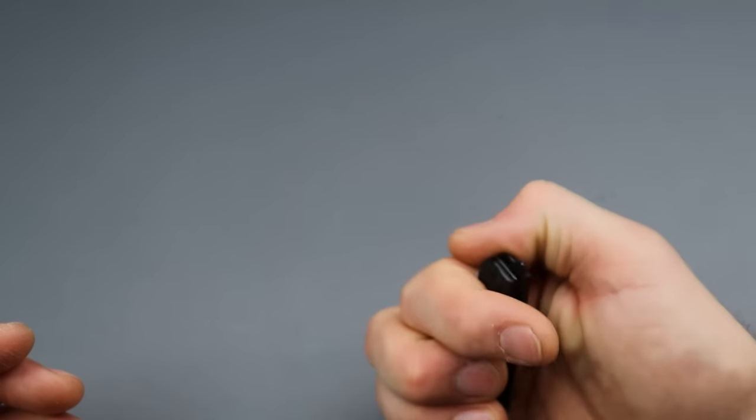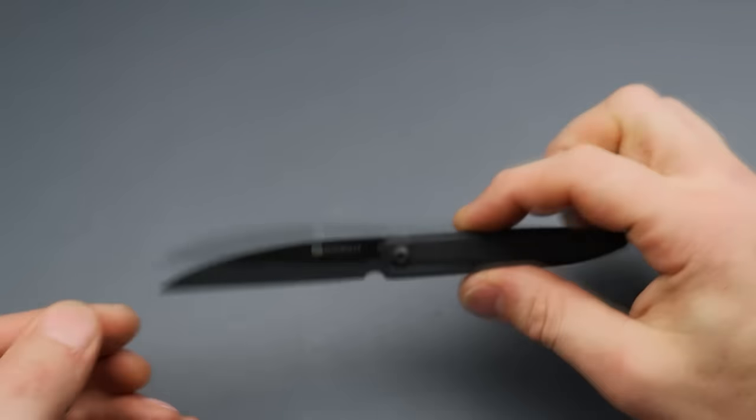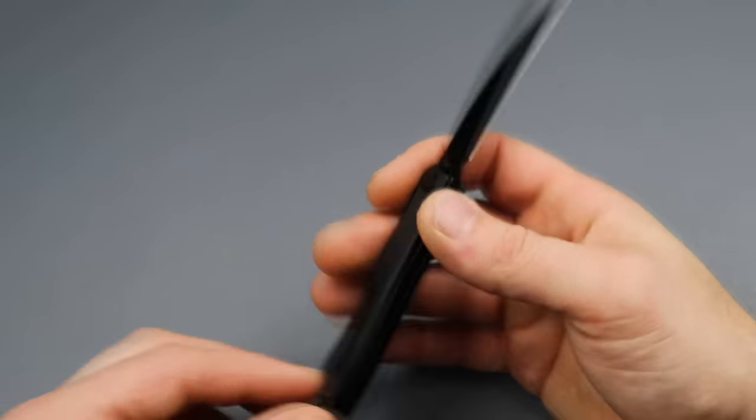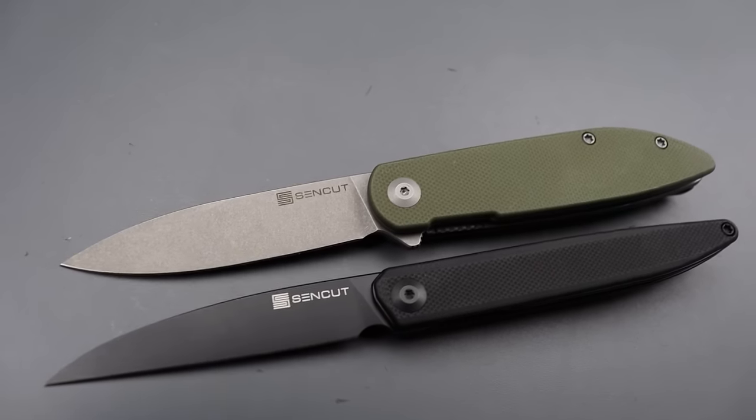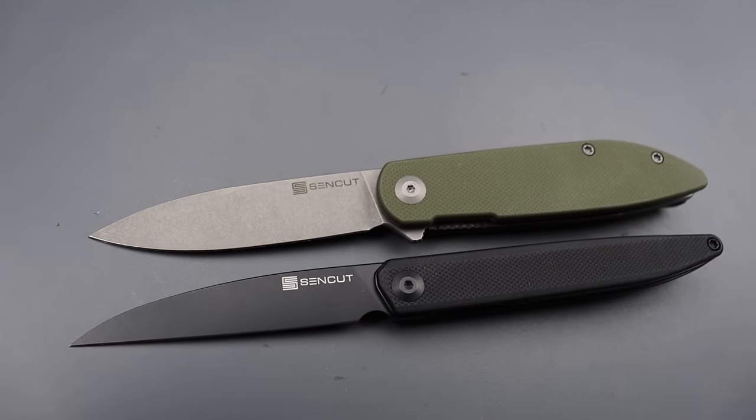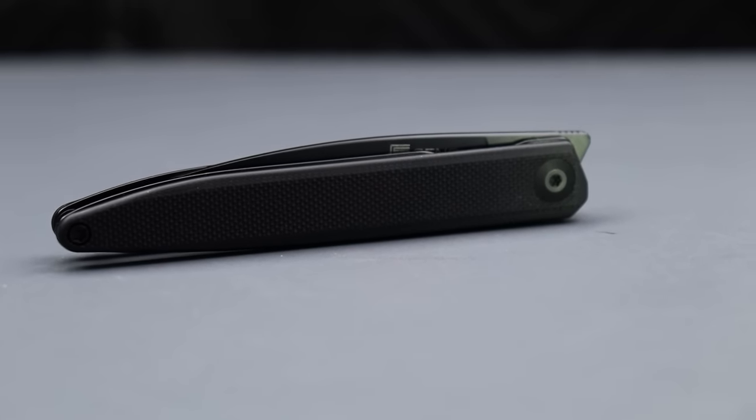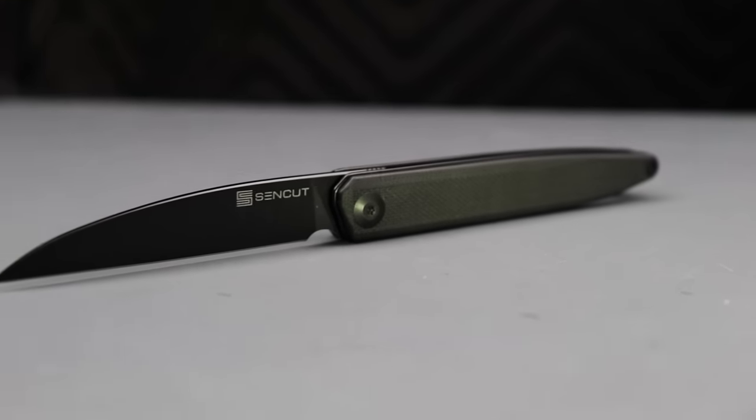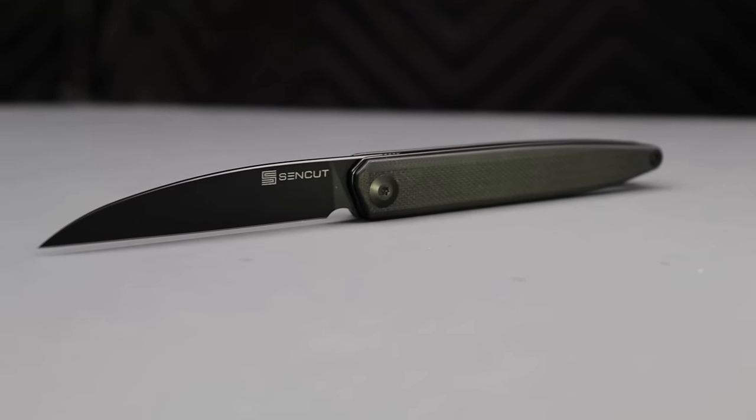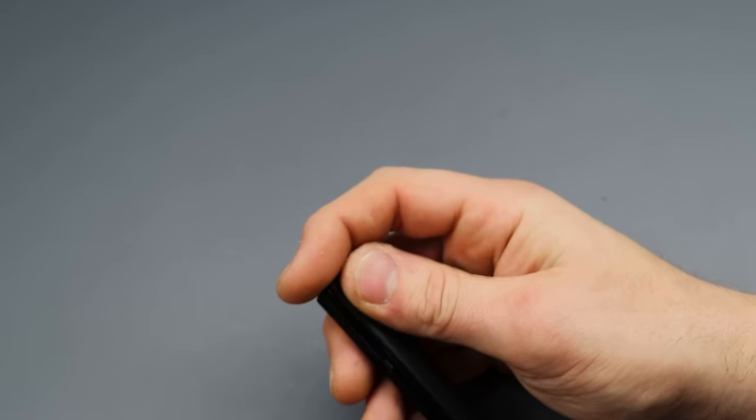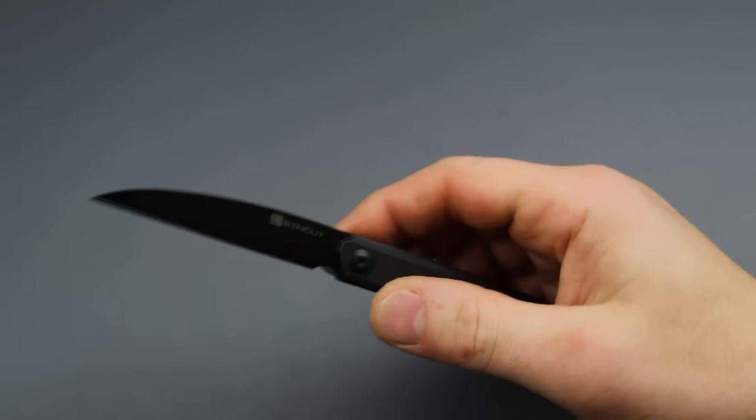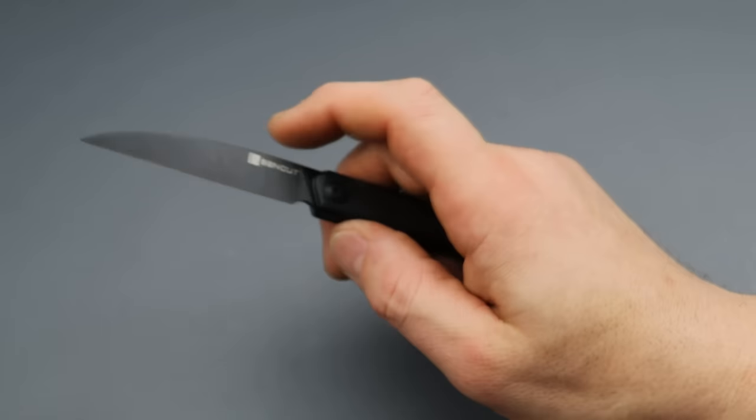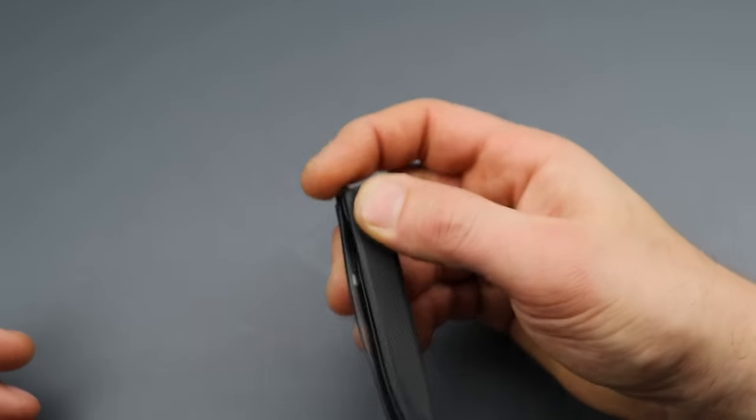Another one just really quick because it's kind of similar. This is the Sencut Jubal. It is very similar size just with a wharncliffe blade and a front flipper. So if you don't like regular flippers and you want to get something a little bit more modern, which not that flippers aren't modern because they are. The front flipper works great on the Jubal. It is very compact though. So it is very slim.